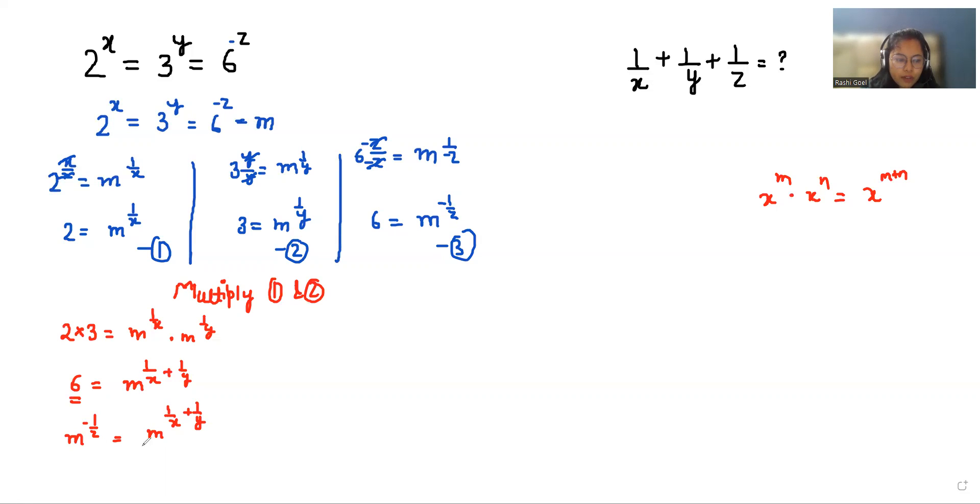Now I'm going to add 1/z to both sides. So we cancel out this. So the value of 1/x + 1/y + 1/z is 0.